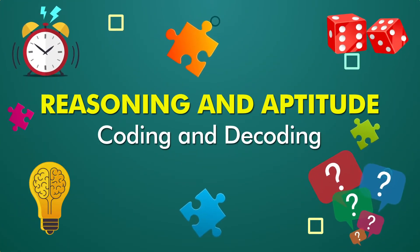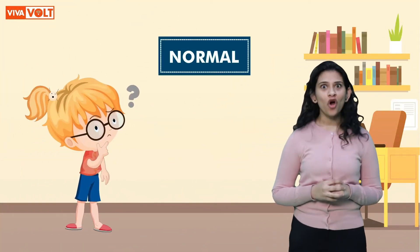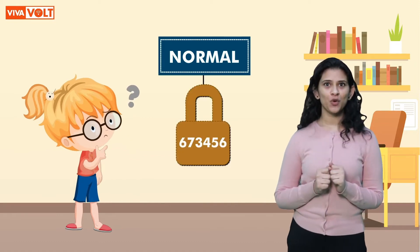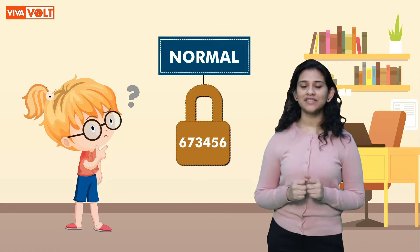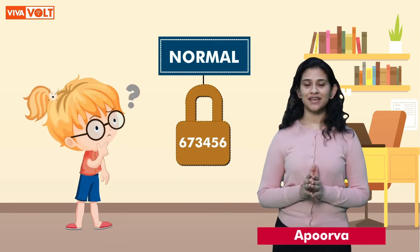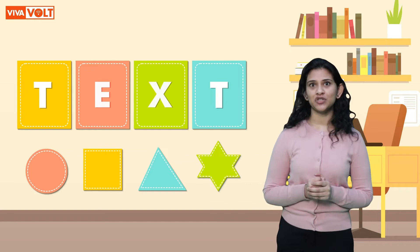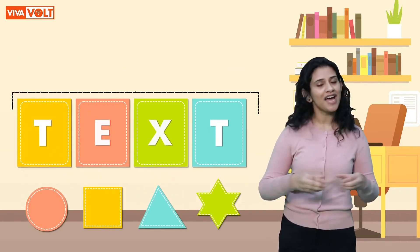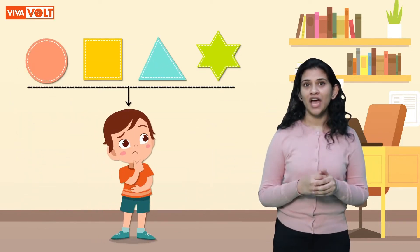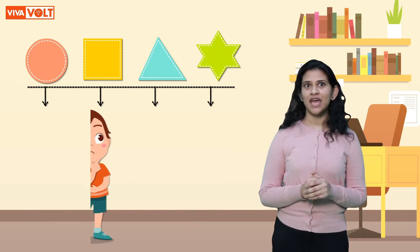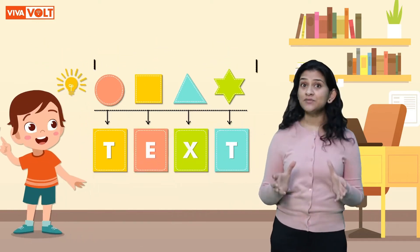Coding and decoding. Hello children, have you ever thought how we can turn a normal text to a secret message? Wouldn't it be interesting? This secret message cannot be written by anyone else. Now you must be wondering what exactly we do in this process. We simply code the normal text to create a secret message, and this particular process is called coding. Once the message has been coded, it is sent to the receiver.